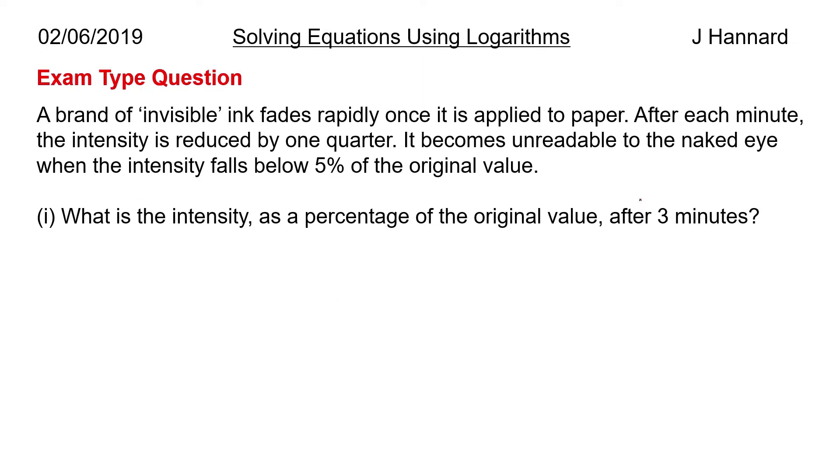And here's an exam type question. So it's all pretty easy so far, you know, once you've got it into that form it should be easy peasy, but this is the exam type question. So a brand of invisible ink fades rapidly once it is applied to paper. After each minute the intensity is reduced by one quarter. It becomes unreadable to the naked eye when the intensity falls below five percent of the original value. Part one: what is the intensity as a percentage of the original value after three minutes?